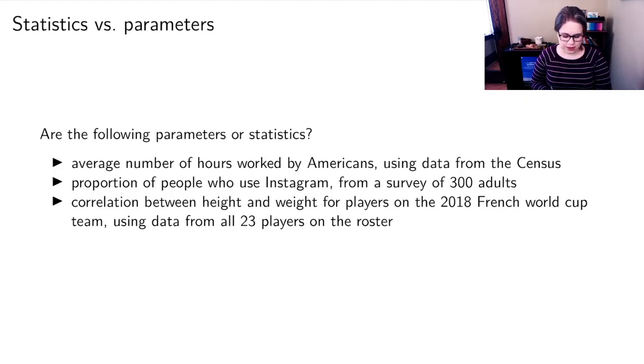So I'd like you to be able to recognize when a number is a parameter coming from a population or a statistic coming from a sample. And I've got a few examples here. The first one is the average number of hours worked by Americans using data from the U.S. census. So is that number, the average, is that a parameter or a statistic? Well, in this case, it's actually a parameter, because the census collects data on all Americans, or it tries to, there are some people that get missed. But the idea is that it's collecting data on everyone. So this would be a parameter, and we can denote it mu.